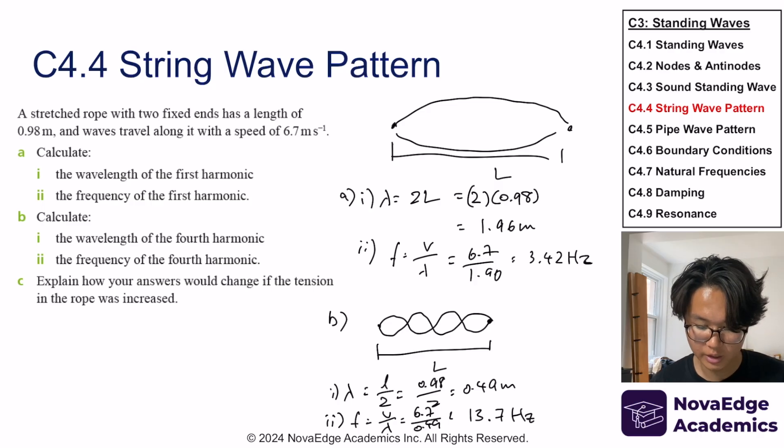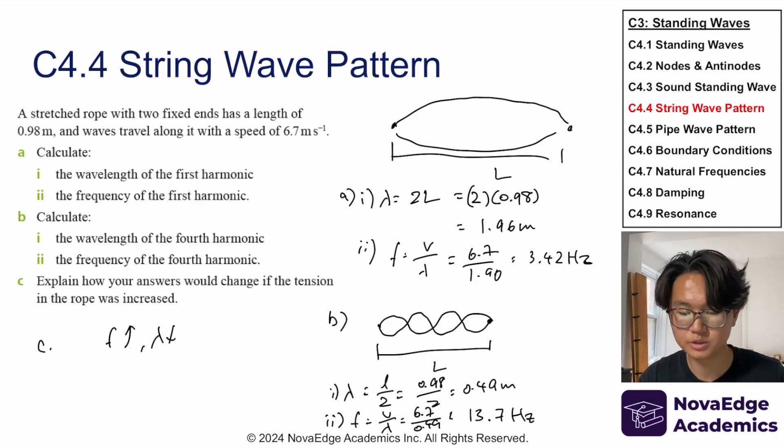That's basically it. Now, how about part C? Explain how your answers would change if the tension in the rope was increased. If you increase the tension, then that means the oscillation becomes faster. And that oscillation becoming faster means frequency increases. So if frequency increases, wavelength decreases. And this doesn't matter at which harmonic we're talking about. It's across all harmonics.